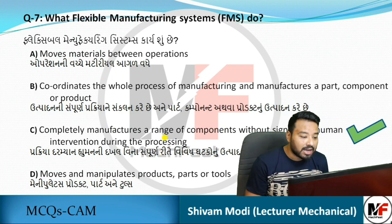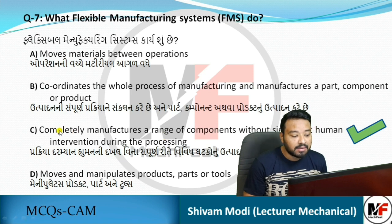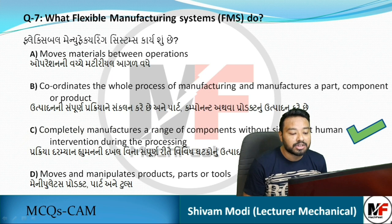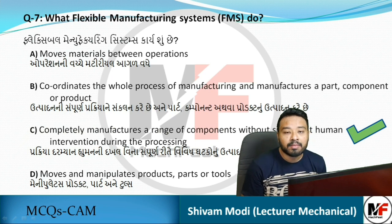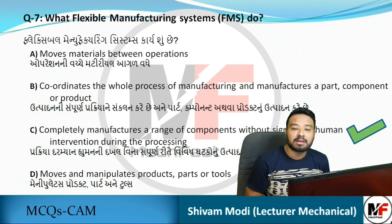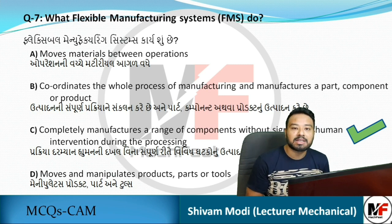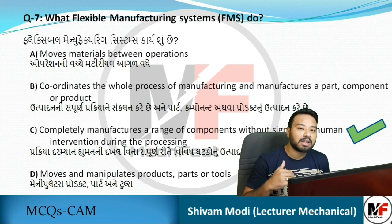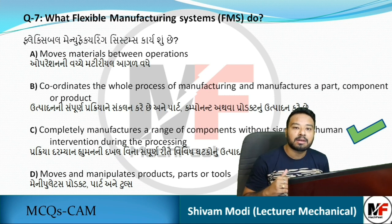Next question: what does a flexible manufacturing system do? The answer is C — it performs complete machining of various parts without human intervention. Once the FMS is programmed, CNC and DNC machines are used for machining, robotics and AGVs handle material, and the system operates automatically.